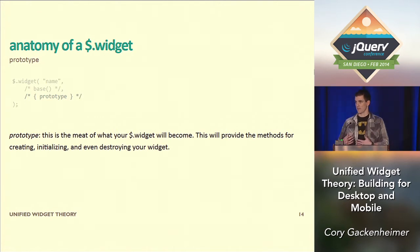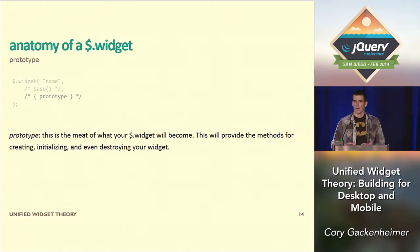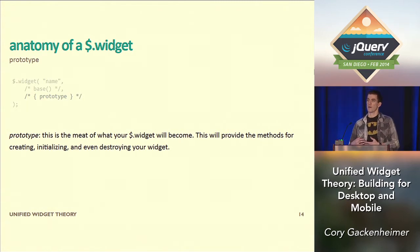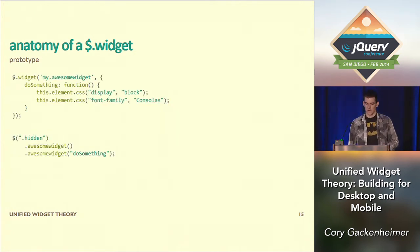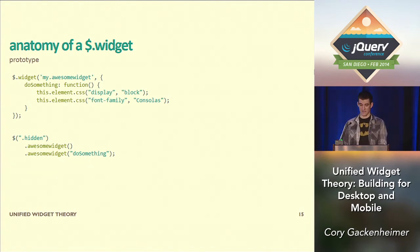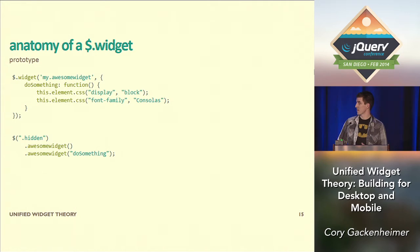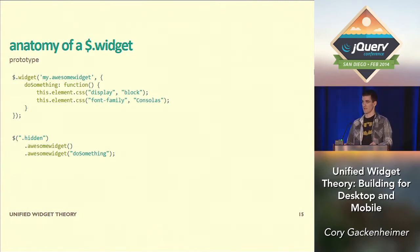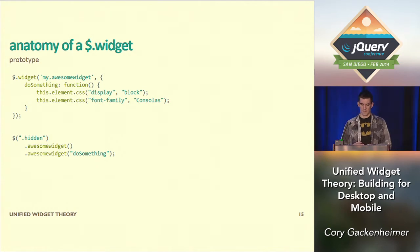The prototype is where all of your methods, properties, and options will live within your widget. You can also override existing prototypes. If you're inheriting from a different base, all of the methods that you want to override can be easily overridden. Here's an example of a very basic widget. It inherits from the main base, and it's got a method called 'do something' which just manipulates the CSS for the element. In the widget factory, 'this' is going to target the instance of your widget, and that's what helps make writing widgets easy.